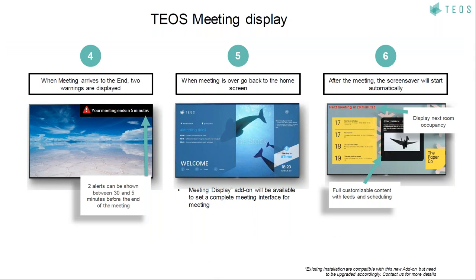When the meeting is close to the end, you will receive alerts visible on the display, to warn that the meeting is going to end. You can configure this time in TIOS — for example, 15 minutes before the end of the meeting, or 5 minutes before. When the meeting is over, you can decide whether to let the meeting continue or go back to the home screen, which will display the information of the next meeting if there is one, or otherwise return to the signage screensaver.